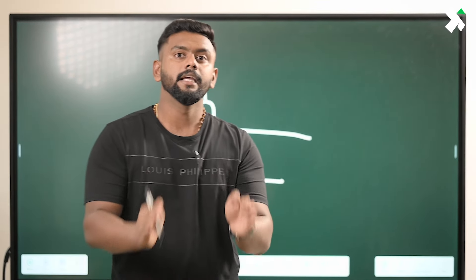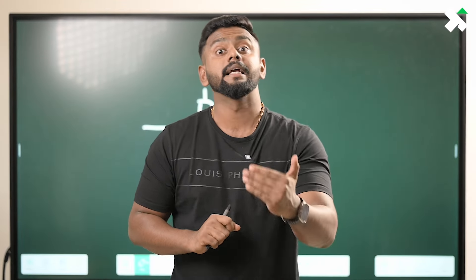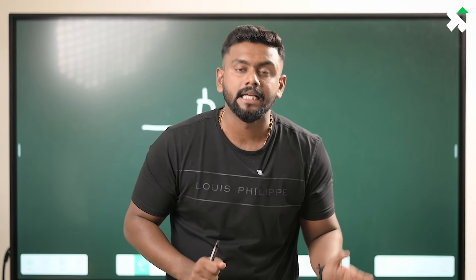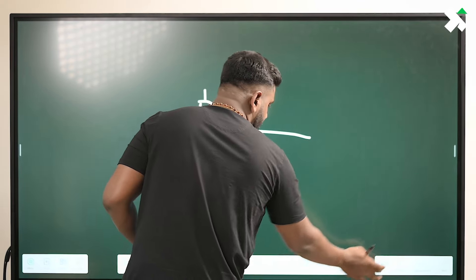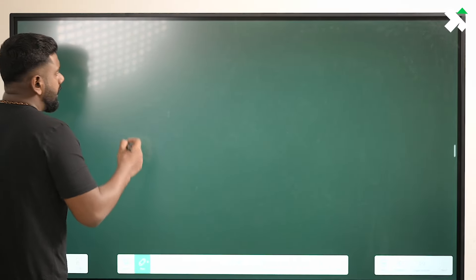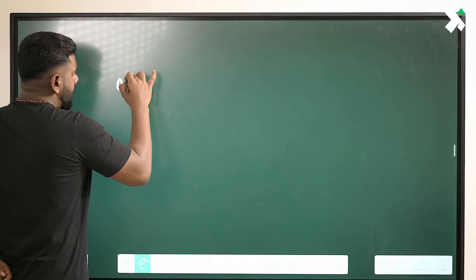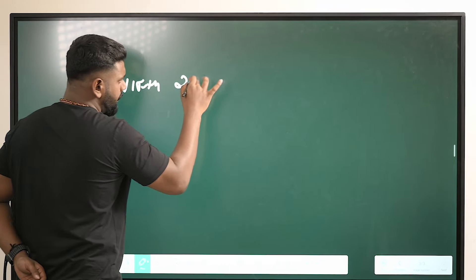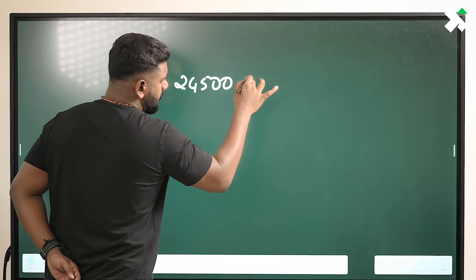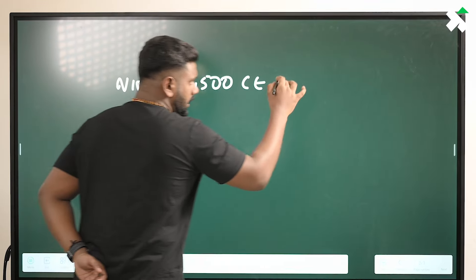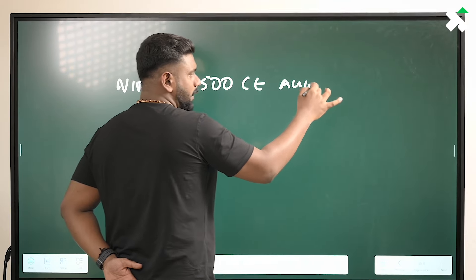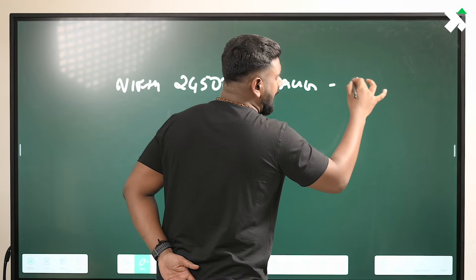If you are going to trade this case, you will go to trade this case. Let's take a case of Nifty — 24,500 CE, August expiry, whatever it is.